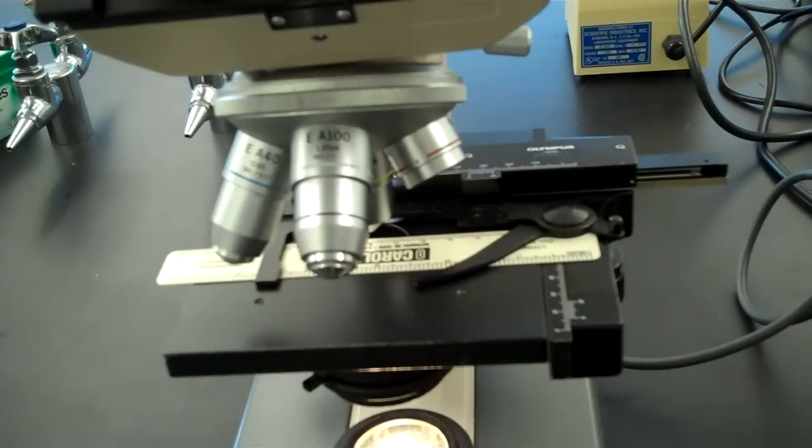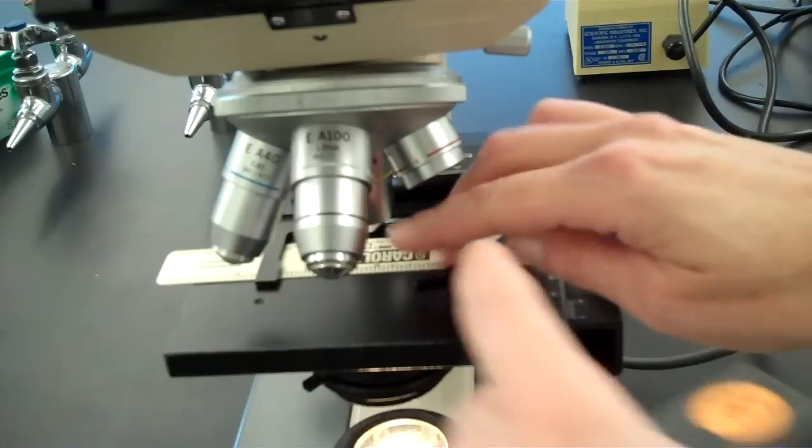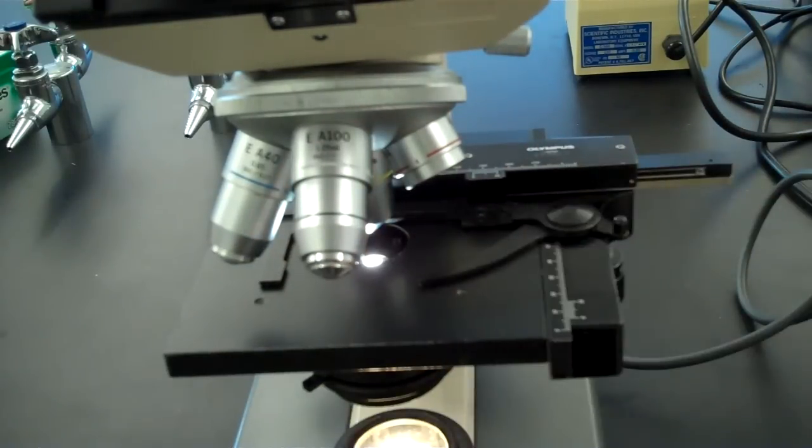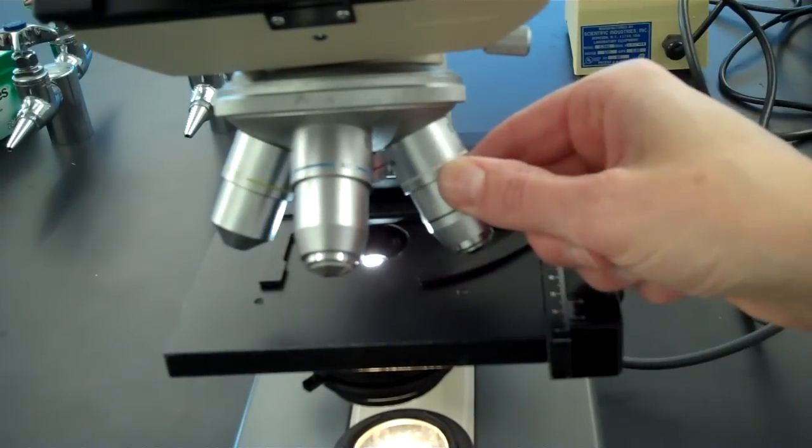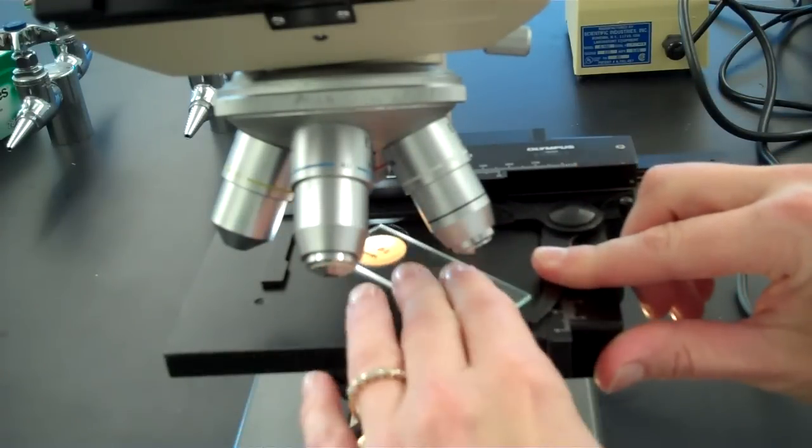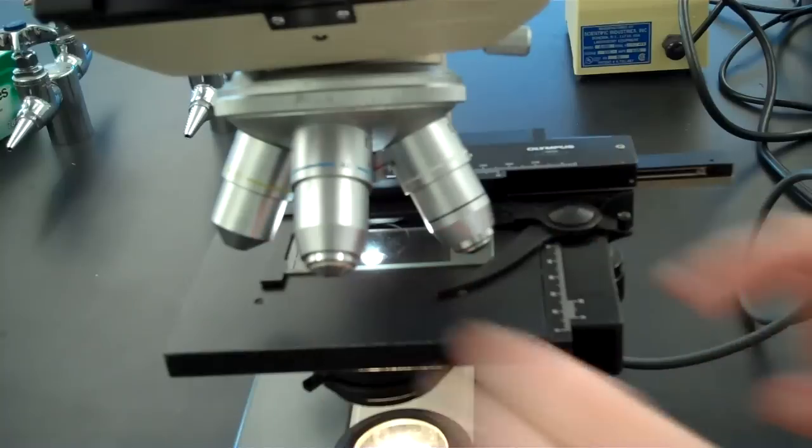Measure your diameter of field again on the 10x objective lens. Now it's time to use your ocular micrometer, which will measure very small distances. Remove your ruler and put your objective lens back to the 4x objective lens and put your ocular micrometer in place.